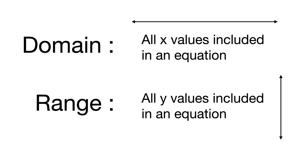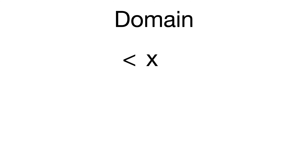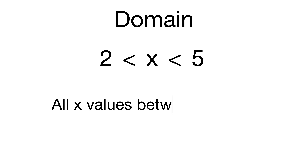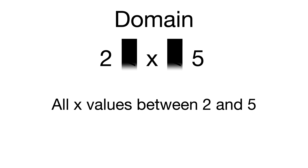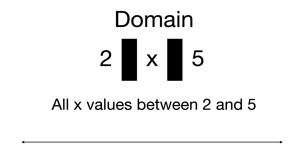Let's take a look at some examples of domain and how domain might be written. Domain covers x values and is usually written like this: x in between two values, so let's say 2 and 5. This just means it's all x values between 2 and 5. You can cross out the inequality signs if that helps. On the number line, the domain is all values between 2 and 5.